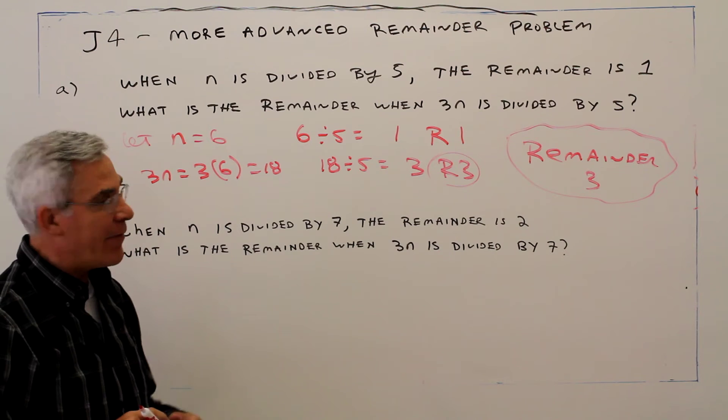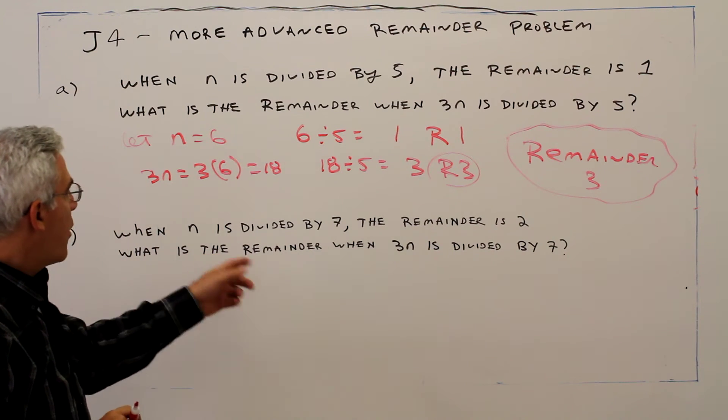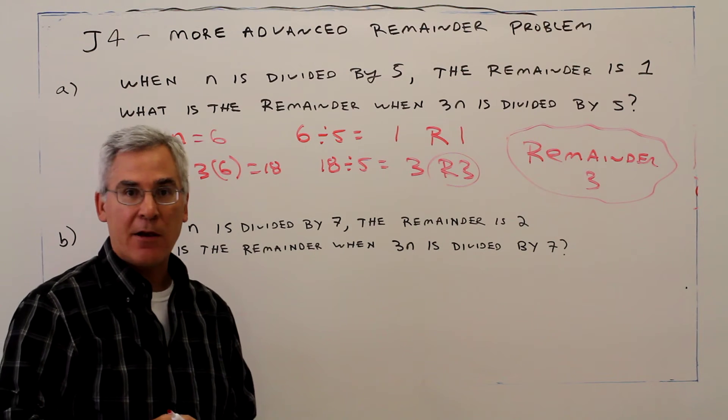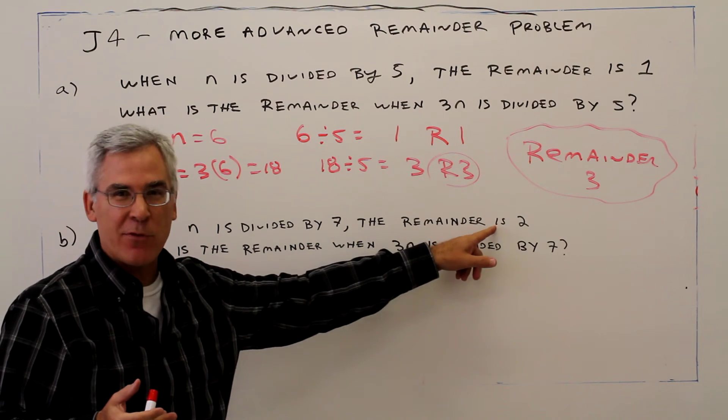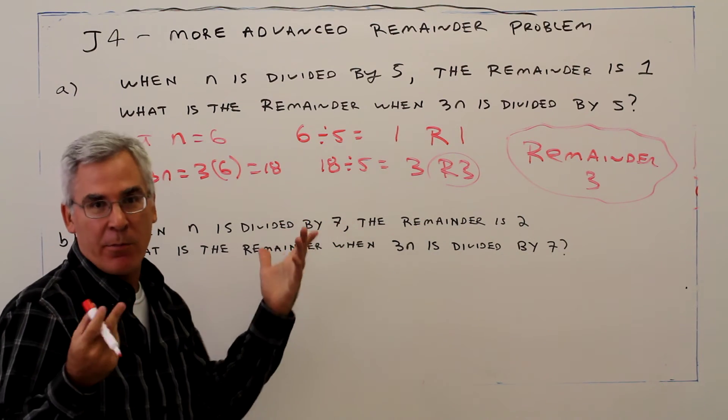When n is divided by 7, the remainder is 2. What is the remainder when 3n is divided by 7? Again, if the remainder is 2, it's going to be 2 more than that, so I'm going to let n be 9.